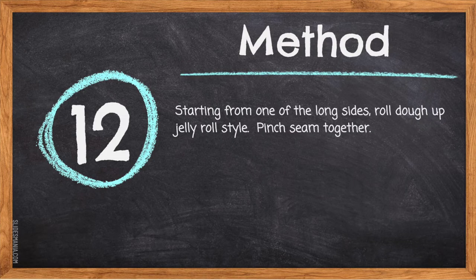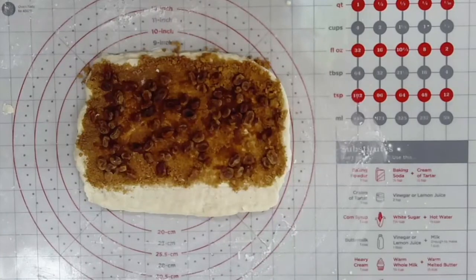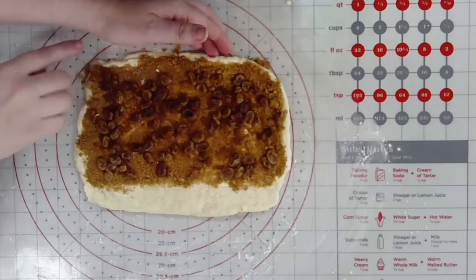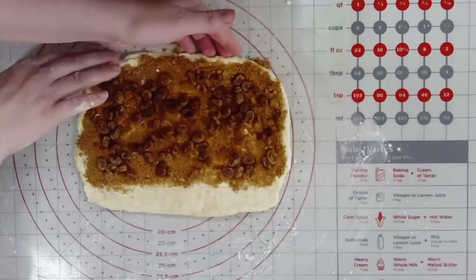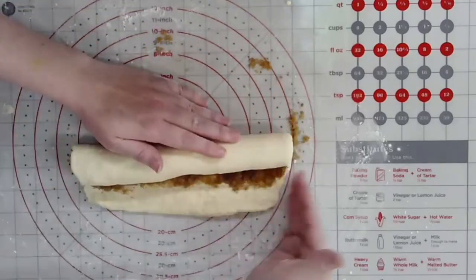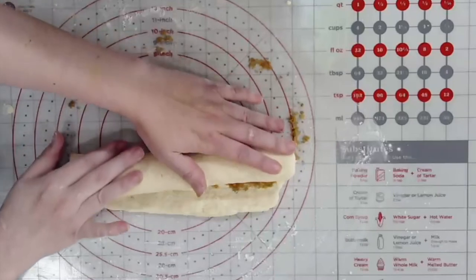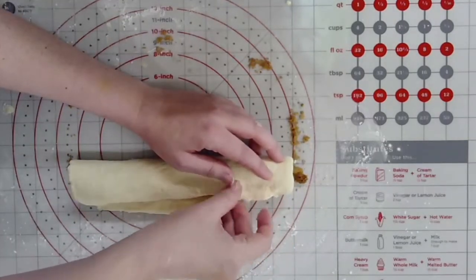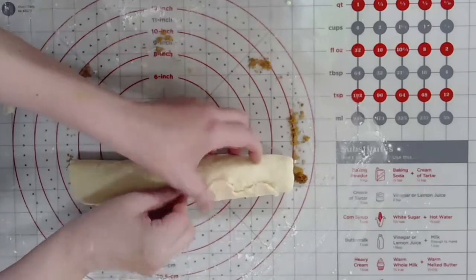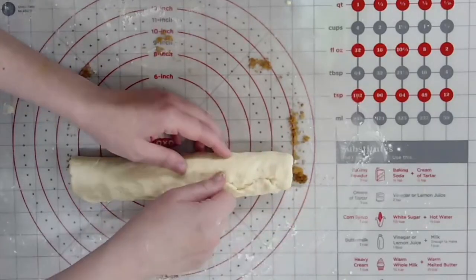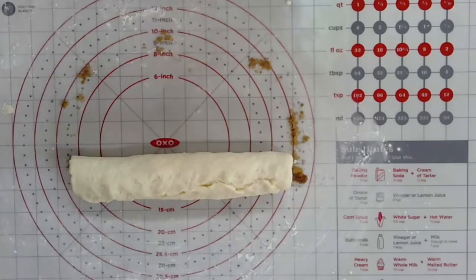Step 12: Starting from one of the long sides (where the filling goes to the edge), roll dough up jelly-roll style, rolling toward the uncovered strip. Pinch the seam together. Roll slowly and tightly, keeping all fillings inside. If the dough is a little dry, wet your fingertips and pinch it together — a little water helps the dough stick. Make sure the seam is well pinched because if not, the cinnamon rolls will uncurl in the oven.